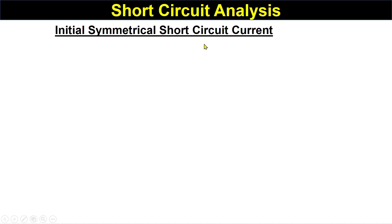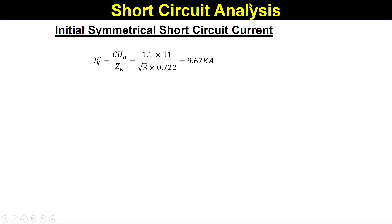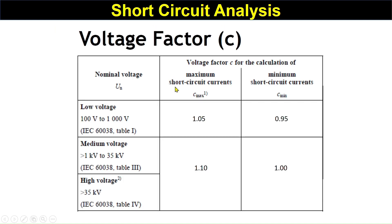Now we calculate the initial symmetrical short circuit current I_k''. The formula is I_k'' = (c × U_n) / (√3 × Z_k), where c is the voltage factor (1.1) and U_n is the nominal voltage. We calculate on the 11 kV side, so I_k'' = (1.1 × 11 kV) / (√3 × Z_k), which gives approximately 9.67 kilo-amperes.